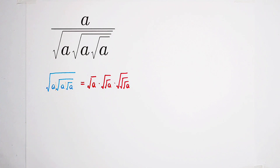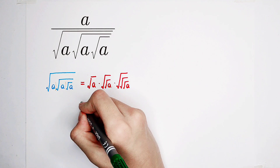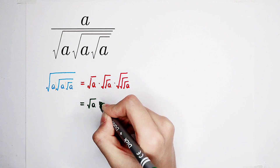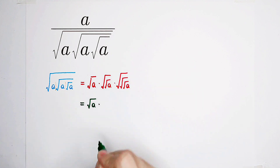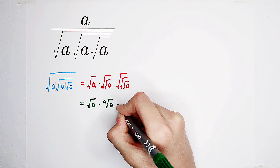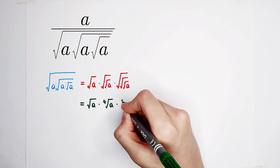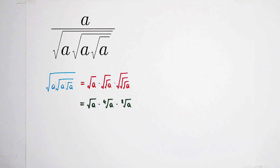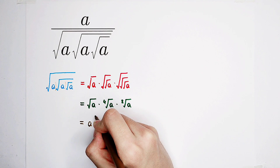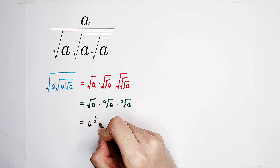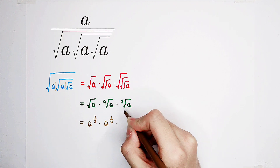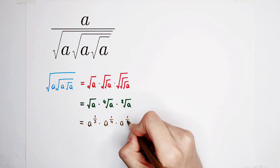So now, this is what we have. We know that square root of a can be written as square root of a. Square root of square root of a is the fourth root of a. Square root of square root of square root of a is the eighth root of a. Further, square root of a is a to the power of 1 over 2. Fourth root of a is a to the power of 1 over 4. And eighth root of a is a to the power of 1 over 8.